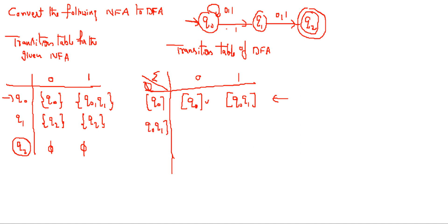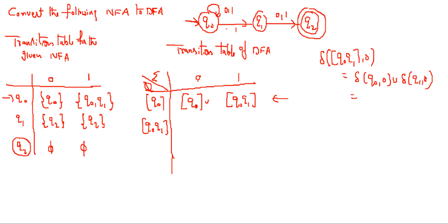Now we will write the new state {Q0, Q1} and compute its transitions. Delta of {Q0, Q1} on input 0 equals delta(Q0, 0) union delta(Q1, 0). Applying 0 on Q0 gives Q0, and applying 0 on Q1 gives Q2. So the union is {Q0, Q2}, which is a new combined state. Therefore, delta({Q0, Q1}, 0) = {Q0, Q2}.